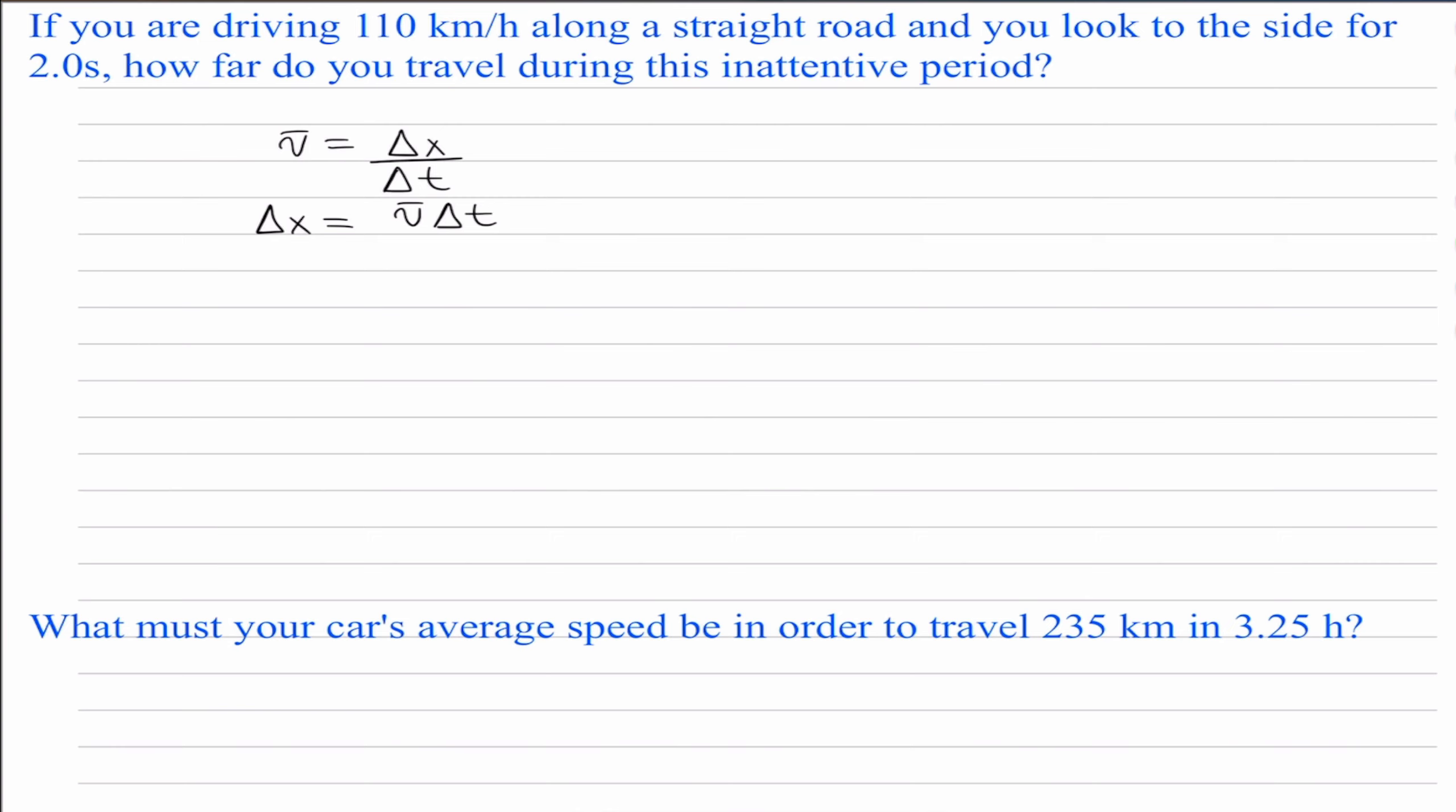We then know that our velocity is 110 kilometers per hour, and the time we looked away was 2.0 seconds. So you're going to multiply that by 2.0 seconds.